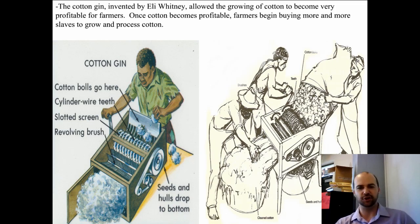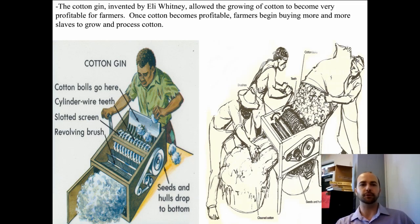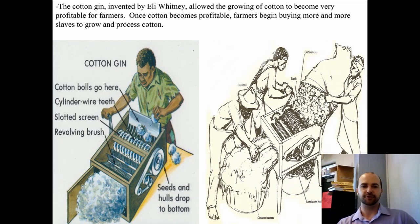Cotton comes with all seeds and hulls mixed in it, and to make it clean, all of that had to be picked out. The cotton gin did that automatically and just made the cotton industry boom. Before the cotton gin was invented, slavery nearly died out — it just wasn't as profitable as farmers hoped. But the cotton gin made that all change.